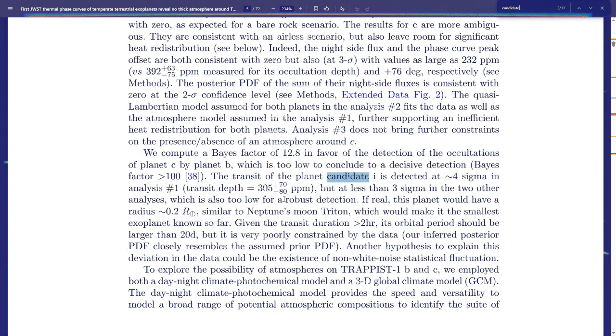More observations. Sure, if real, this planet would have a radius of 20% Earth's similar to Neptune's moon Triton. Dang. Make it the smallest exoplanet known so far. Dang. But it is poorly constrained by the data to explain this deviation in the game.